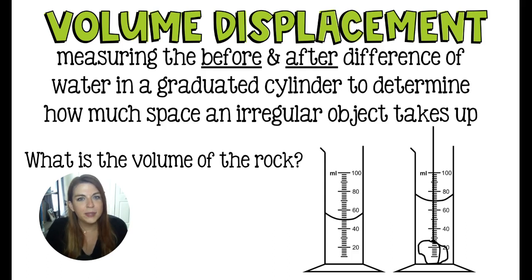In a volume displacement, you are going to have some volume of water, and you're going to put it in a graduated cylinder, take its volume measurement. Then you are going to add an irregular shaped object, so something funky that doesn't have its own volume formula. You're going to add that weird shaped object to the graduated cylinder, and it's going to take up space. In doing that, it pushes the water level up.